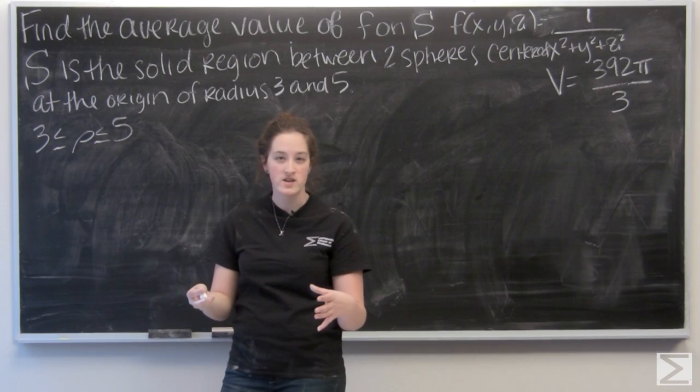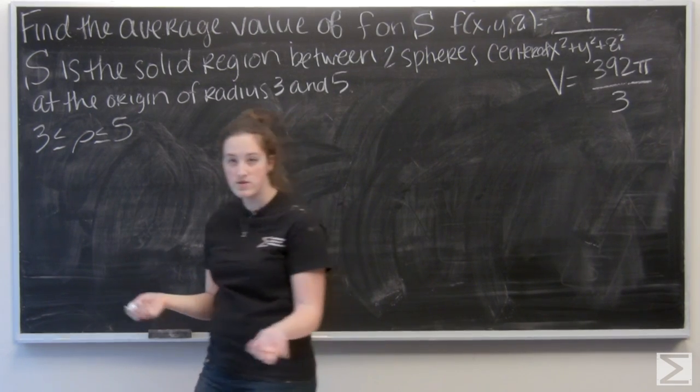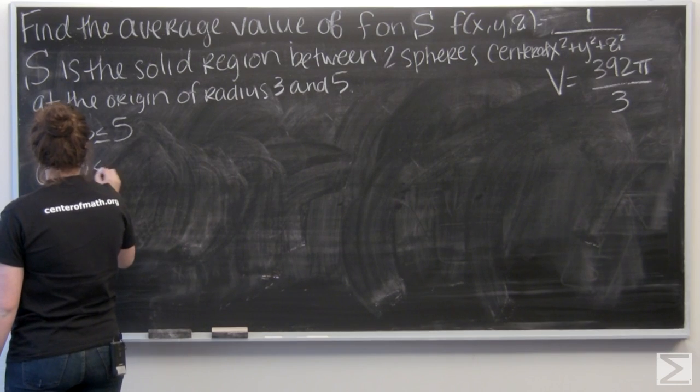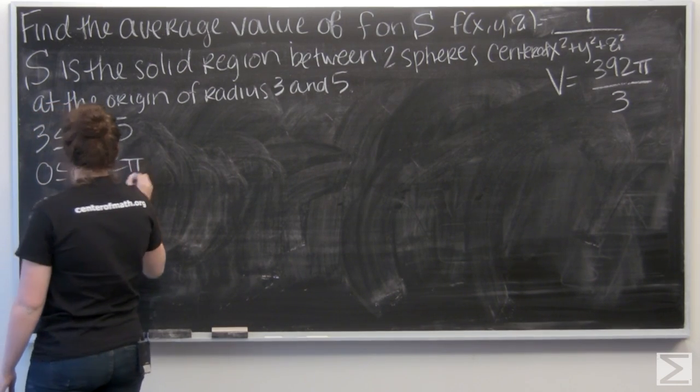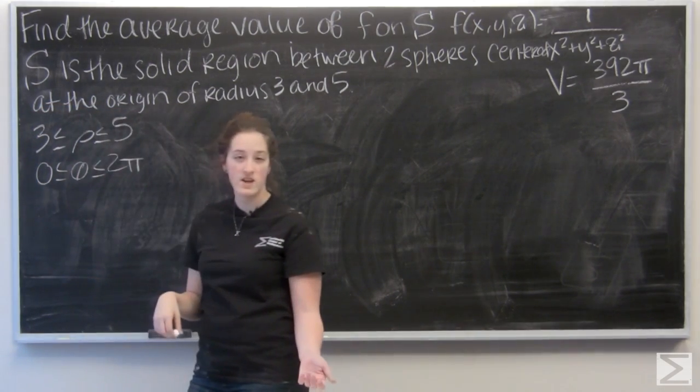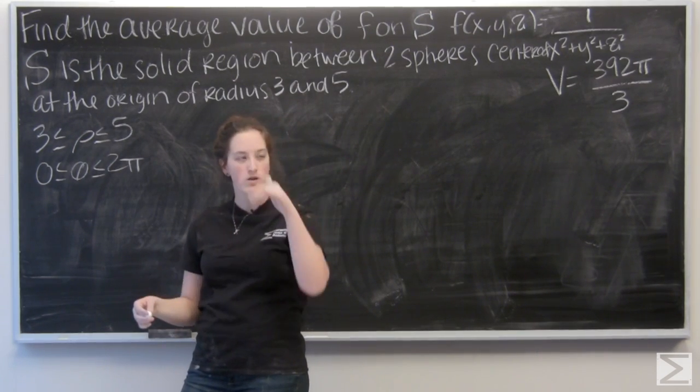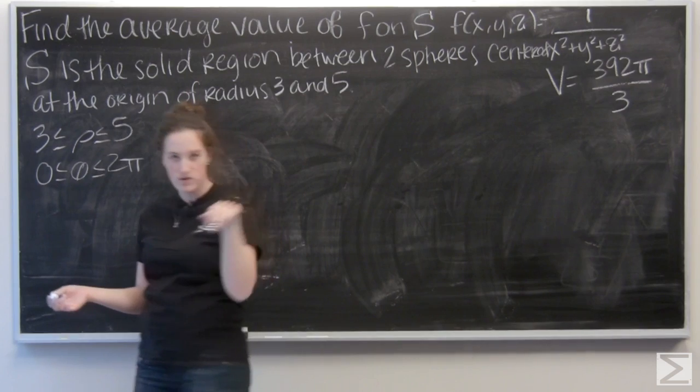And we're looking at the whole sphere here. So theta is going to go from 0 to 2 pi. And likewise phi is going to go from 0 to pi. Because the sphere goes all the way around the z-axis, 180 degrees.